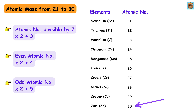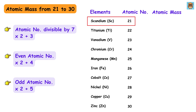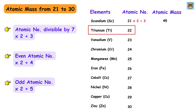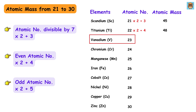Let us quickly apply this. Scandium has atomic number 21, which is divisible by 7, so 21 times 2 is 42 plus 3, giving us 45. Titanium has atomic number 22, which is even, so 22 times 2 is 44 plus 4, giving us 48. Vanadium has atomic number 23, which is odd and not divisible by 7, so 23 times 2 is 46 plus 5, giving us 51.